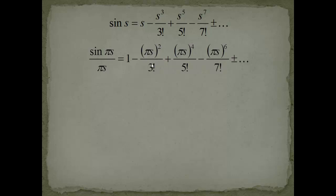We have pi squared over 3 factorial s squared plus pi to the fourth power over 5 factorial s to the fourth power, minus and so forth. It's still an alternating sum.